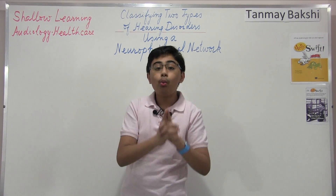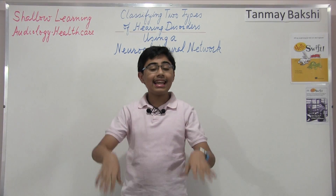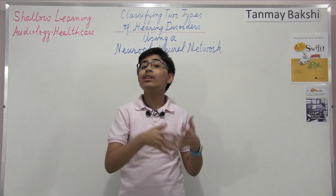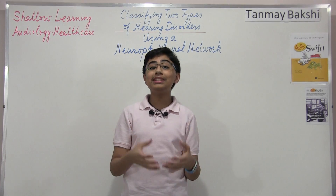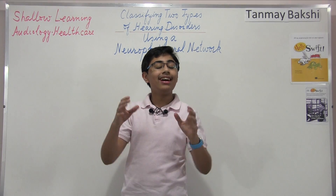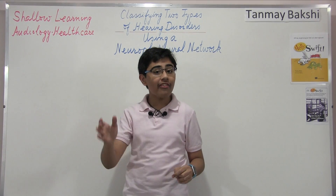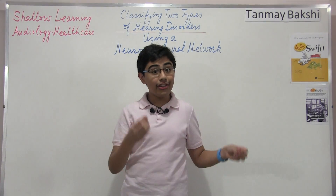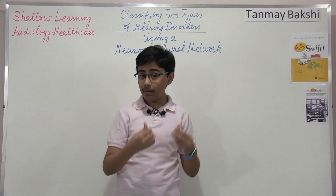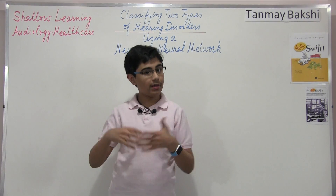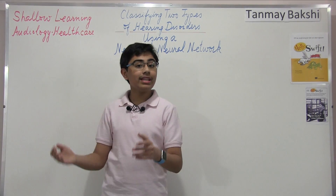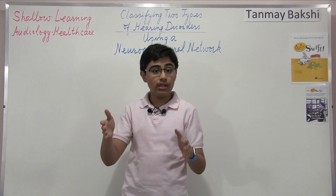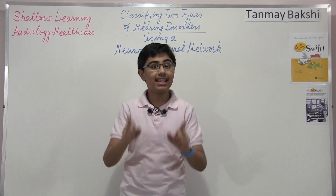Today what we're going to be doing is we're going to be taking a dataset from the UCI machine learning repository, and we're going to be using it to train a neural network powered by the Neurof API in order to create a neural network that can take some attributes about a person and classify whether they have a normal ear or an ear with two different types of hearing disorders.